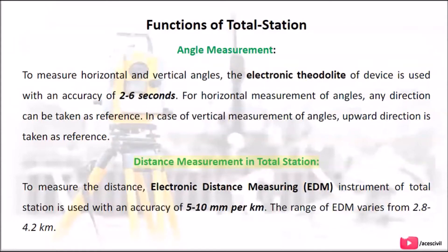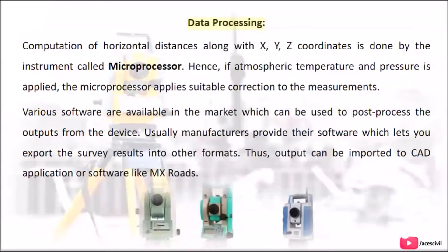Distance measurement in Total Station: The Electronic Distance Measuring (EDM) instrument is used with an accuracy of 5 to 10 mm per km. The range of EDM varies from 2.8 to 4.2 km. Data processing: Computation of horizontal distances along with X, Y, Z coordinates is done by the microprocessor. If atmospheric temperature and pressure data is applied, the microprocessor applies suitable correction to the measurements.